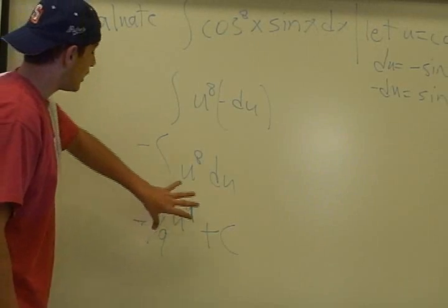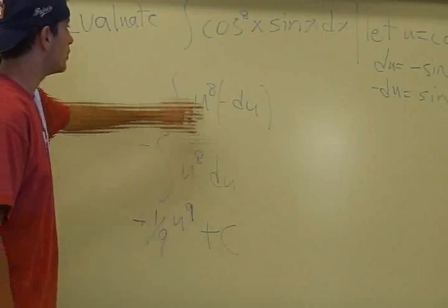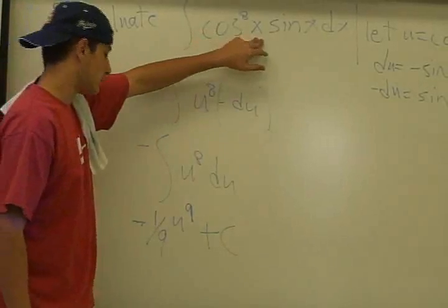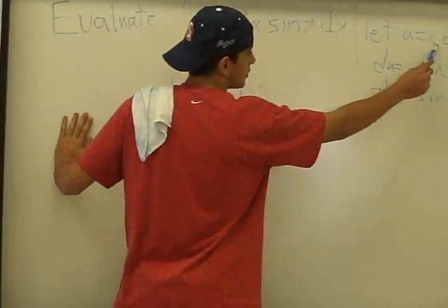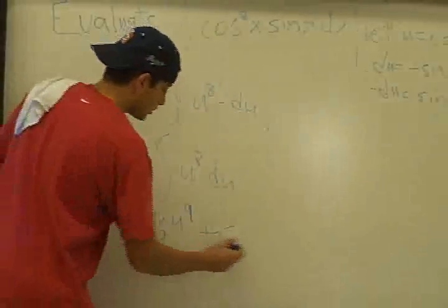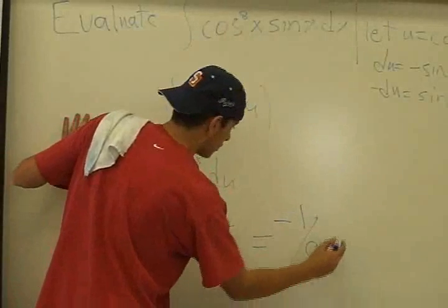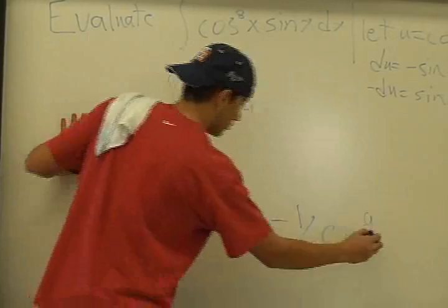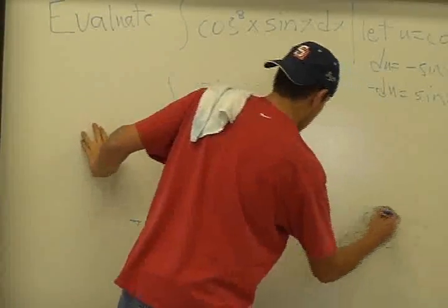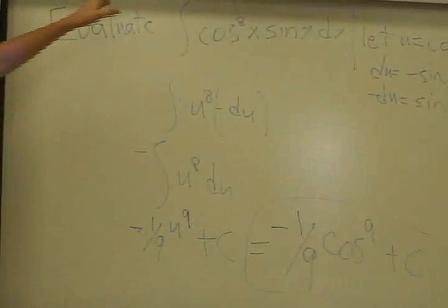And so now we have this anti-derivative right here, except we have it in terms of u, and we need it back in terms of x. So we take this u right here and plug in what we substituted for, which is cosine x. So that would actually equal negative one ninth cosine to the ninth plus c. And that is the anti-derivative of that. Thank you.